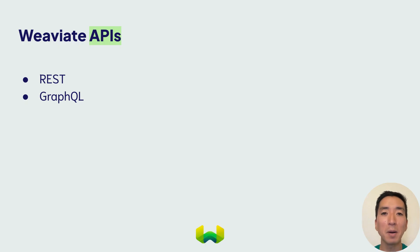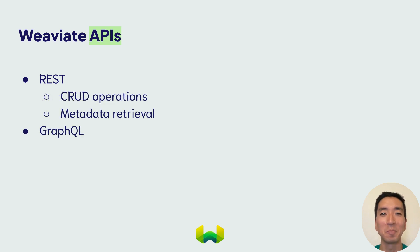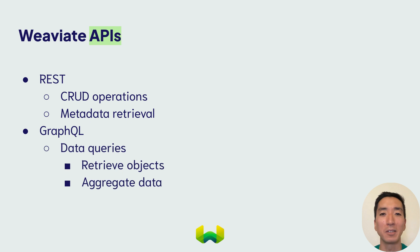For example, in Python, you can use the client to talk to both the REST and GraphQL APIs. Note that the REST API is typically used for CRUD operations and retrieving metadata, while the GraphQL API is used for queries such as retrieving data objects or exploring vector spaces.